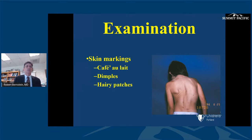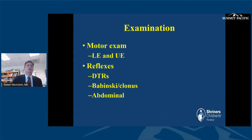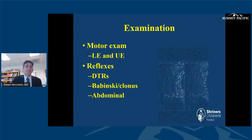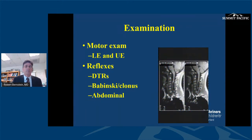On examination, look for skin markings — here's the child with cafe au lait spots and neurofibromatosis. Do a motor exam of both upper and lower extremities to confirm normal strength and reflexes, and look for clonus. Check abdominal reflexes — these should be symmetric. One patient had completely normal motor function and deep tendon reflexes but had an asymmetric abdominal reflex. Based on that finding, we obtained an MRI and found a very large cervical syrinx.